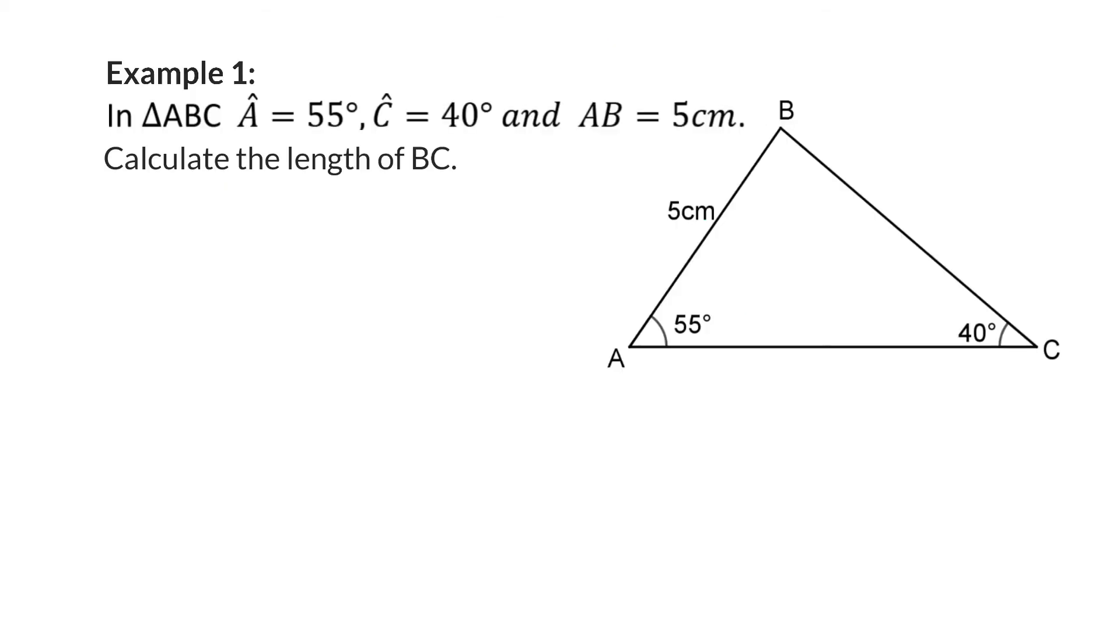Example 1. In triangle ABC, angle A is 55 degrees, angle C is 40 degrees, and AB is 5 centimeters. Calculate the length of BC.